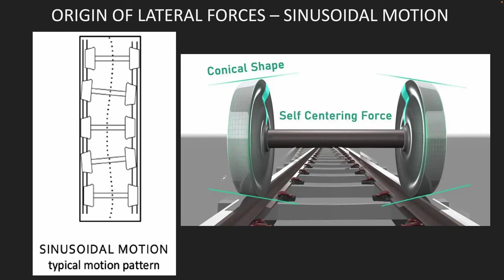What are the origins of these lateral forces? Well, one reason is that train wheels are not perfectly cylindrical, but rather conical. One reason for conical wheels is that it makes it easier for wheels to go around curves.